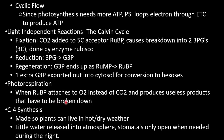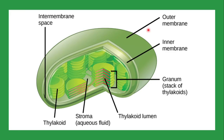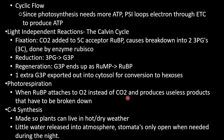Photorespiration occurs when RuBP attaches to oxygen instead of CO2. The problem is that the purpose of the cycle is to fix carbon, but with oxygen it produces useless products that must be broken down, requiring even more energy. C4 synthesis is for plants in hot, dry weather — these plants conserve water by only opening their stomata when needed, during the cooler nighttime.